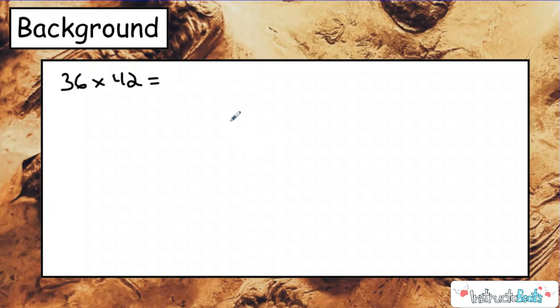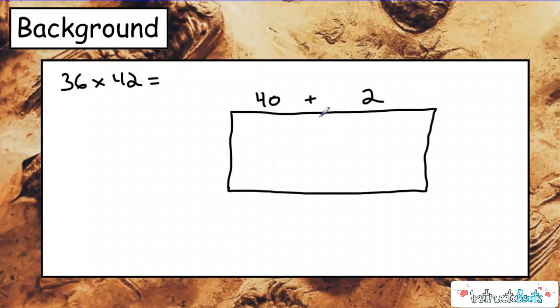And many of us did this with the open array. So instead of drawing out the really big array, and some of your teachers might have called it a box method, but we call this the open array. And we split our factors up using our distributive property knowledge and our place value knowledge.